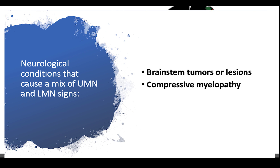Certain conditions give a mixture of both upper and lower motor neuron signs. A brainstem tumor involving the pons or midbrain will cause upper motor neuron signs from involvement of the UMN tracts passing through the brainstem, as well as lower motor neuron signs from compression on the cranial nerve nuclei. Similarly, traumatic or compressive myelopathy — compression of the spinal cord — produces upper motor neuron signs below the level of the trauma and lower motor neuron signs at the level of the trauma due to nerve root involvement. ALS, or amyotrophic lateral sclerosis, also known as Lou Gehrig's disease, has a combination of both upper and lower motor neuron signs.